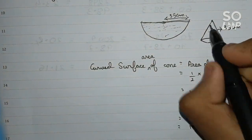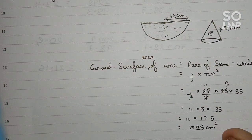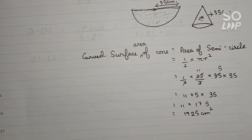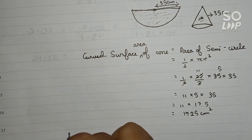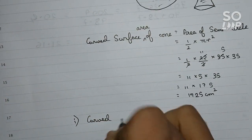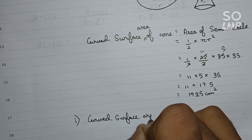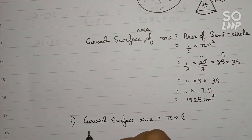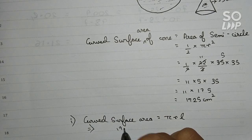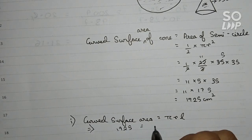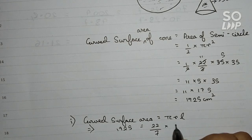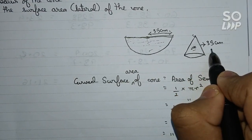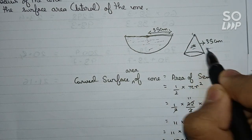The curved surface area of the cone is also equal to 1925 cm². From this we can find the radius of the cone. The formula for curved surface area of a cone is πrL. Substituting: 1925 = (22/7) × r × 35, where L = 35 cm is the slant height and π = 22/7.